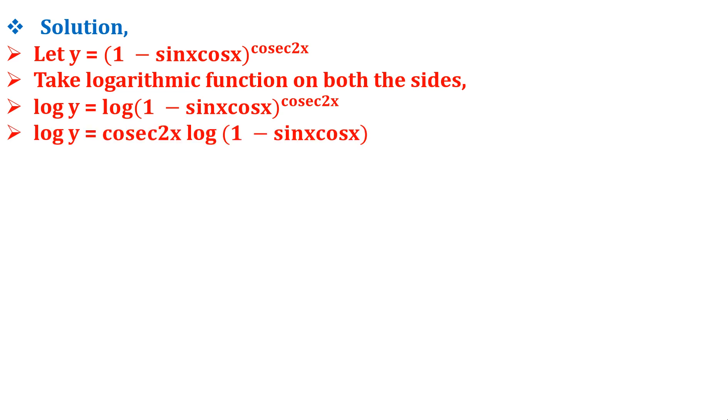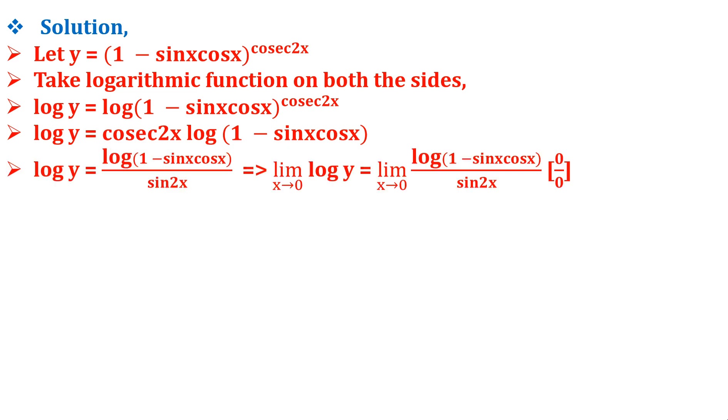By the property of log, we get log y = cosec 2x · log(1 - sin x cos x). This gives us log y = log(1 - sin x cos x) / sin 2x. Cosec 2x gets converted to 1/sin 2x. This implies limit x tends to 0